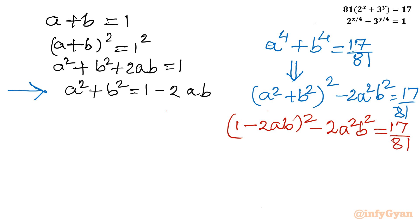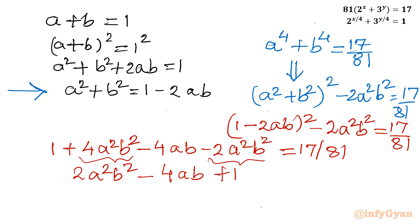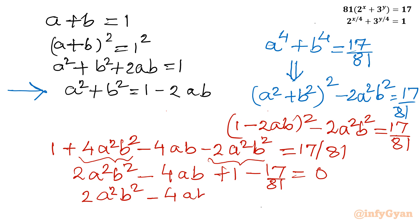Expanding (1 - 2ab)²: I write 1 + 4a²b² - 4ab - 2a²b² = 17/81. Combining 4a²b² - 2a²b² gives 2a²b² - 4ab + 1 = 17/81. Taking 17/81 to the left side: 2a²b² - 4ab + (81 - 17)/81 = 0, so 2a²b² - 4ab + 64/81 = 0.